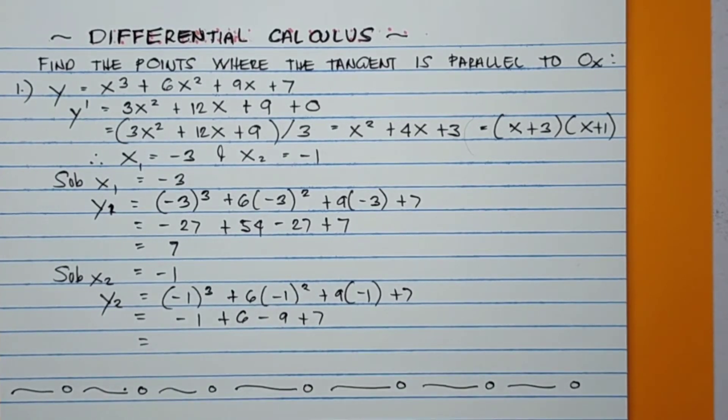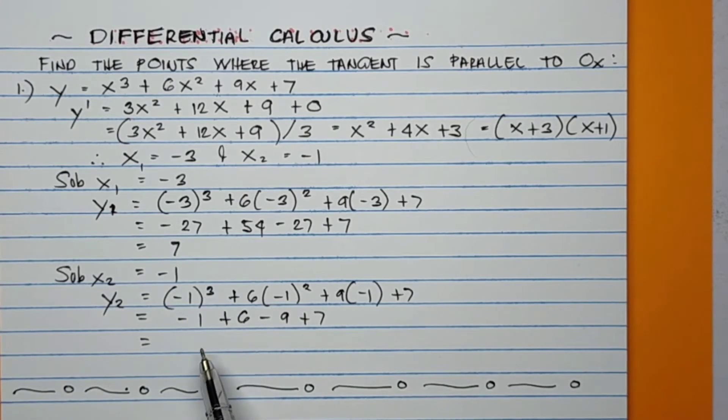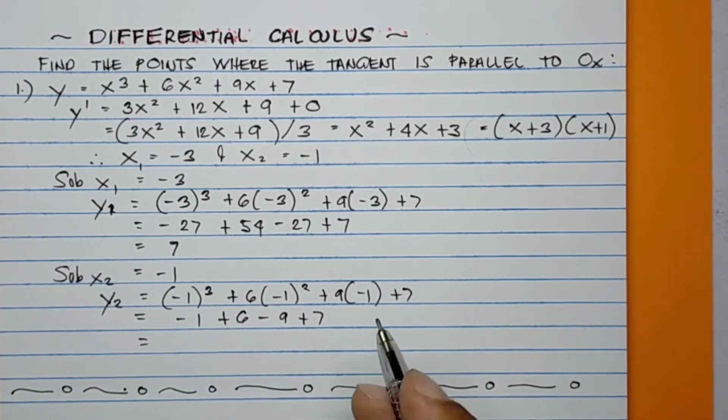So therefore, y₂, adding these values: -1 + 6 - 9 + 7, that equals 3.